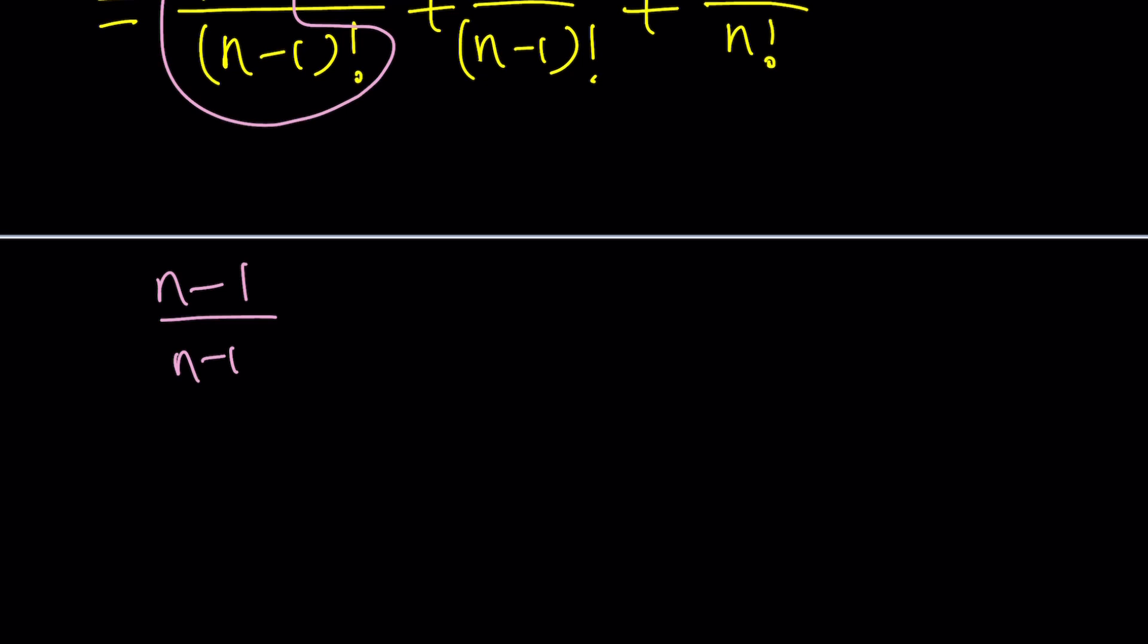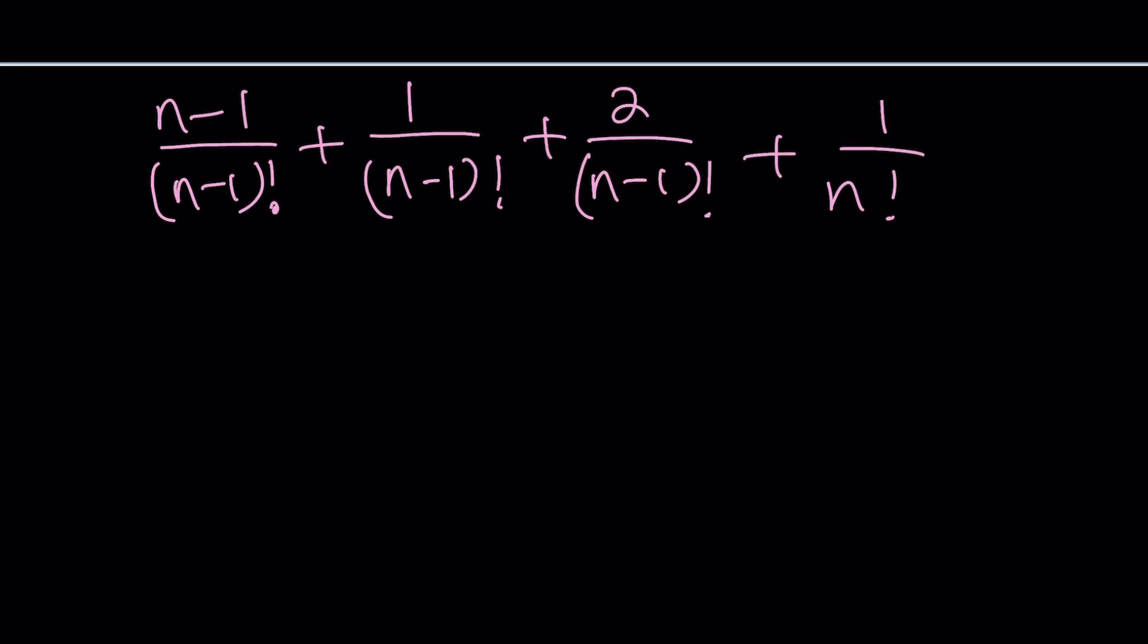We have like 4 pieces so far. Isn't that crazy? Now don't worry about it too much because we're going to combine these two things because they have a common denominator. So we're going to have (n-1) over (n-1) factorial plus 3 over (n-1) factorial plus 1 over n factorial.